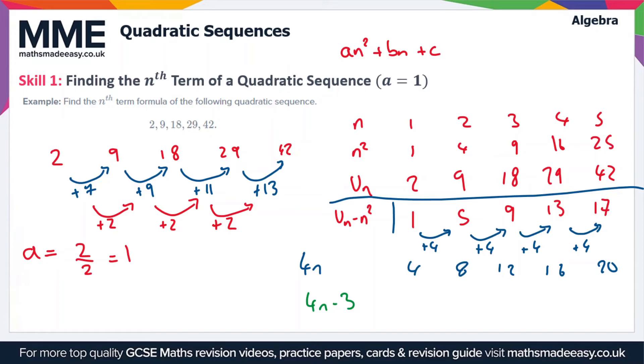Now all we have to do to find the nth term of the original sequence is combine the value of A that we established originally with this new nth term formula that we got down here. So our nth term of the quadratic sequence is going to be AN squared so that's just N squared and then the BN plus C part is what we've just found here. So our nth term is going to be N squared plus 4N minus 3.